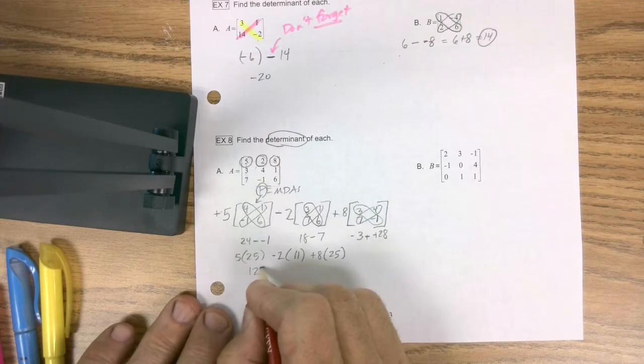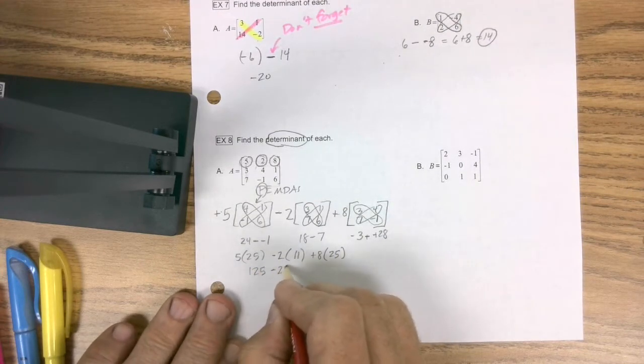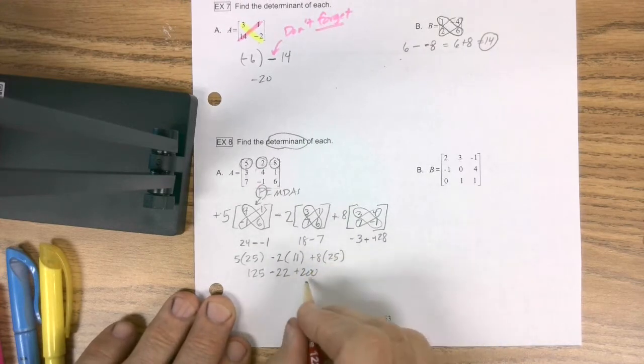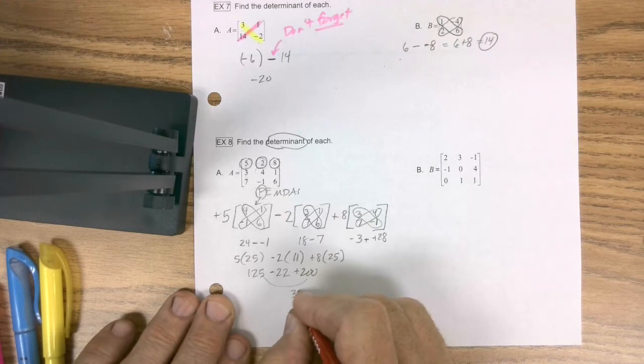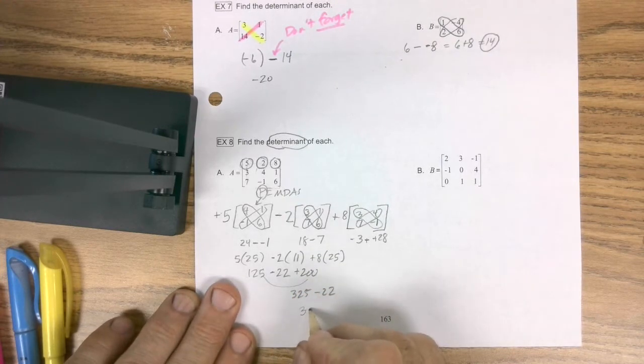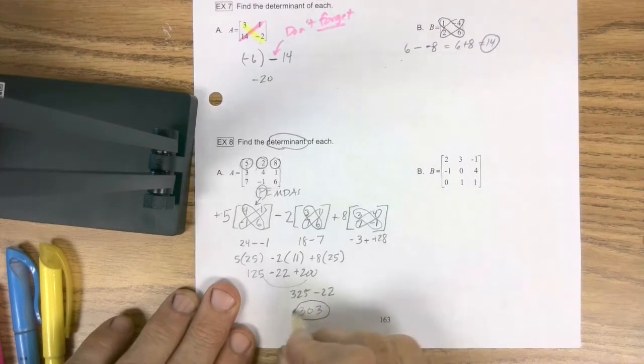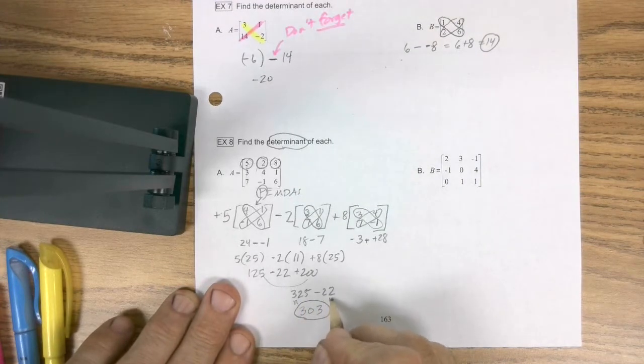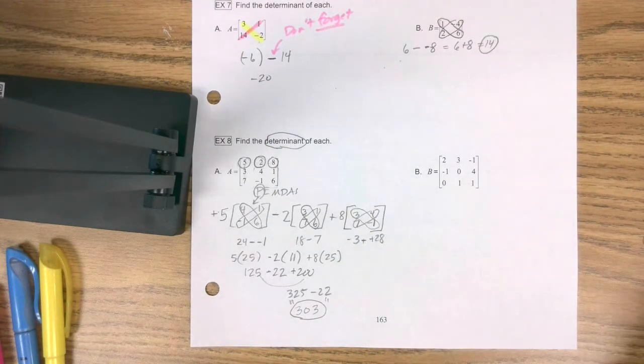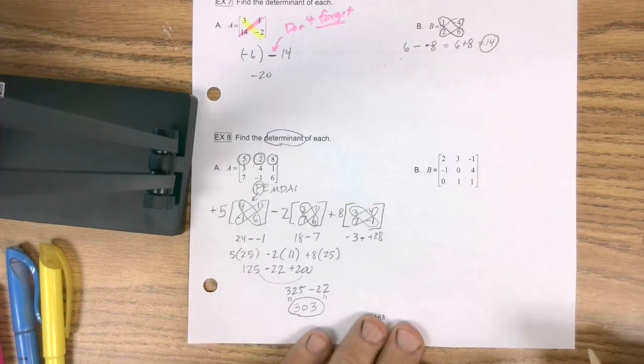Well, this is 125. This is negative 22. This is 200. So I'm going to add the positives together. I get 325 minus 22. That'd be 303. There's my special number. But you're not sure why it's special yet. But you're just practicing, getting ready for Kramer's Rule.